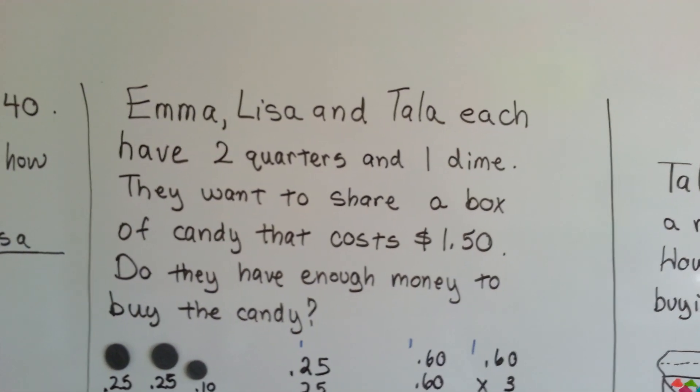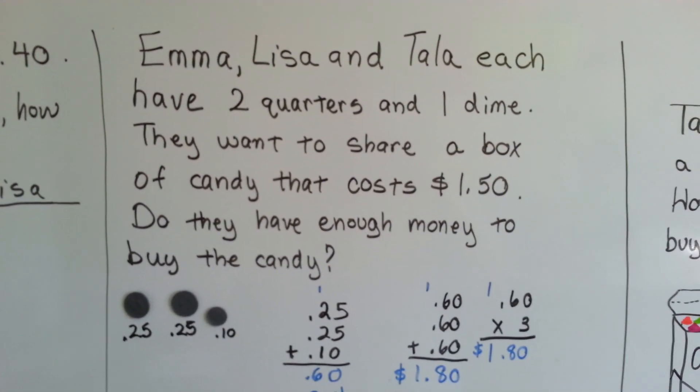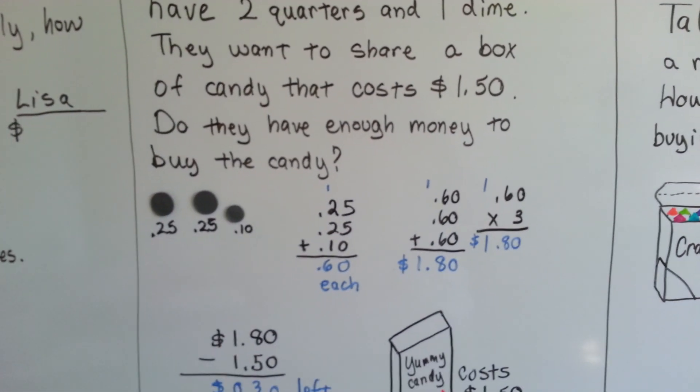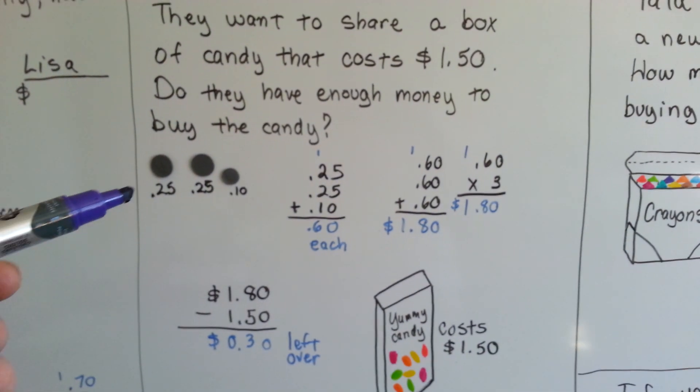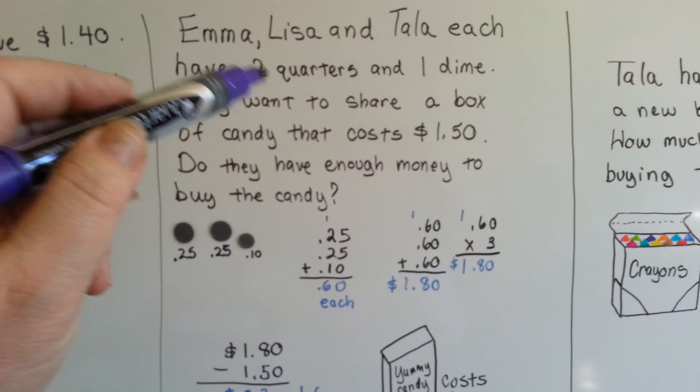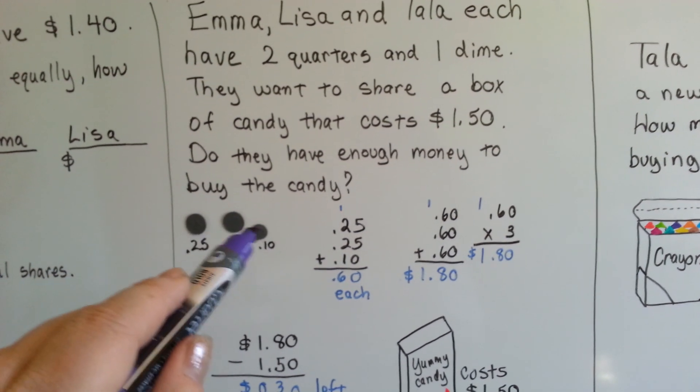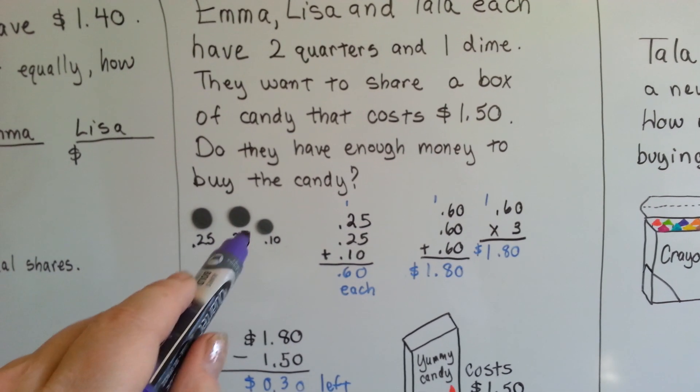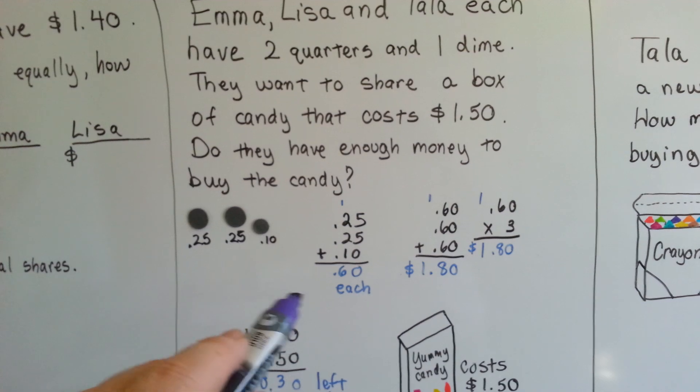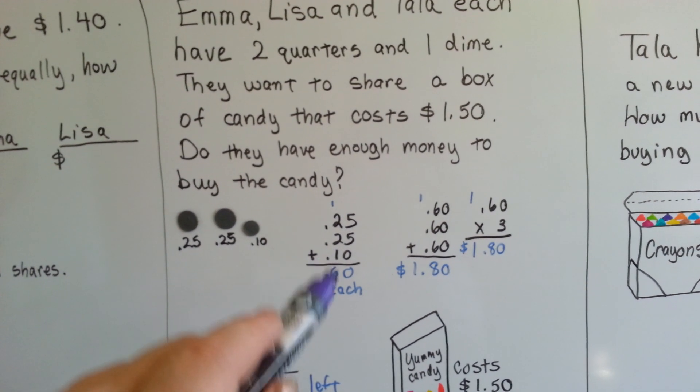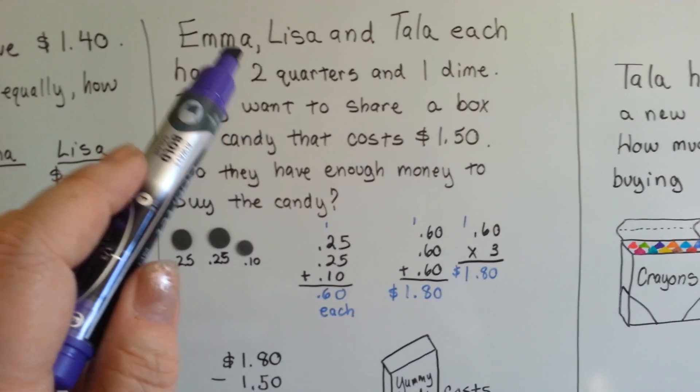Emma, Lisa, and Tala each have two quarters and a dime, and they want to share a box of candy that costs a dollar fifty. Do they have enough money to buy the candy? Well, they each have two quarters and a dime. One quarter, two quarters, and a dime. That's fifty cents, and ten more is sixty cents. And we add them up.